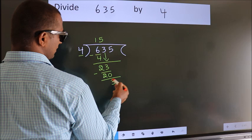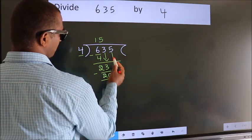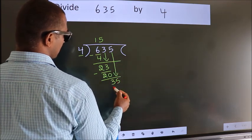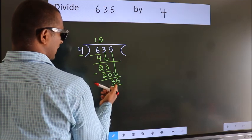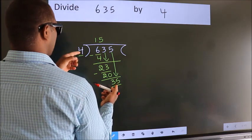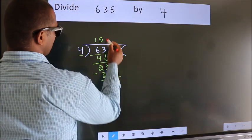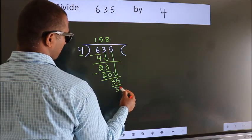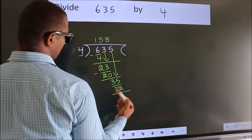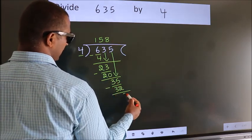After this, bring down the beside number. So, 5 down, making 35. A number close to 35 in the 4 table is 4 eights 32. Now we subtract. We get 3.